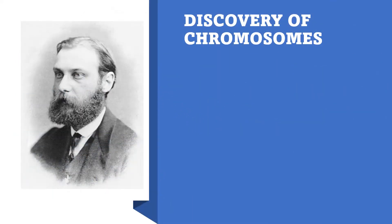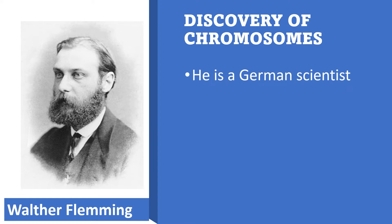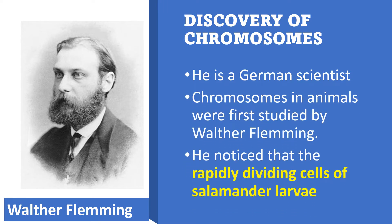Who discovered chromosomes? Walter Fleming — he is a German scientist. Chromosomes in animals were first studied by Walter Fleming. He noticed that in the rapidly dividing cells of salamander larvae, chromosomes were first found.